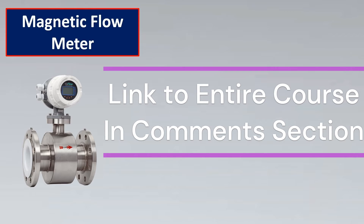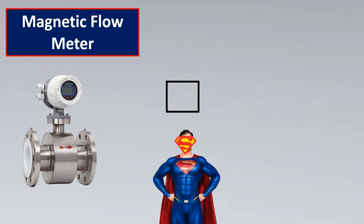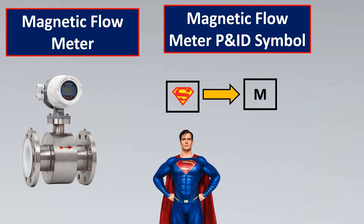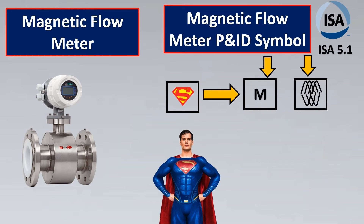Magnetic flow meters are very similar to Superman — just as the 'S' is the most important thing in Superman, the 'M' is the key element for a magnetic flow meter. The P&ID symbol is sometimes shown as an 'M' inside a box, standing for magnetic. ISA 5.1 also provides another symbol based on the construction of magnetic windings, where the elements inside the box represent the magnetic coils.